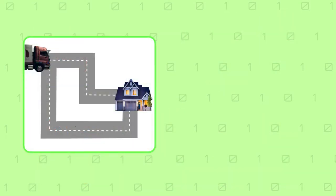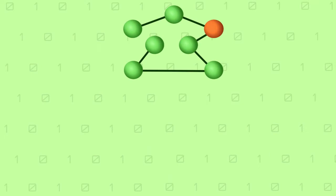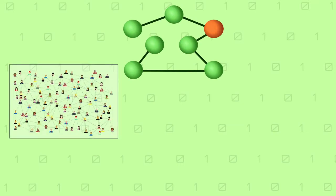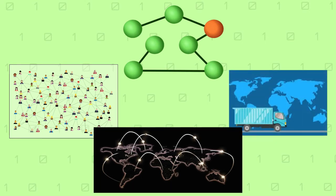In this video I will show you how you can use the graph data structure to find a path that will take a delivery truck from point A to point B. Usually the graph data structure is used to represent relationships between objects. It can be used to represent a social network, a telephone network, or in this case we are going to use it to navigate a delivery area.